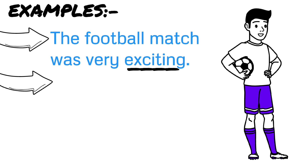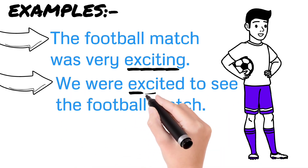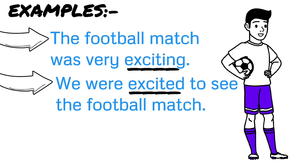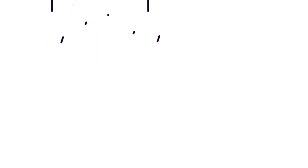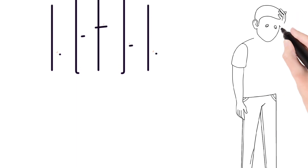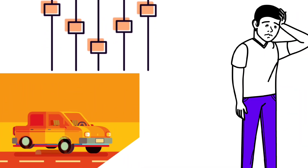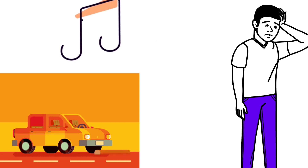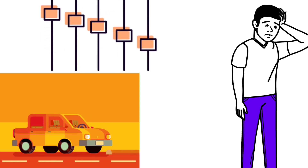'We were excited to see the football match' — 'excited' is an example of an -ed adjective, describing how the people felt. Similarly: 'I am interested in music' and 'The music was not interesting' — both 'interested' and 'interesting' are adjectives. 'He looked very tired' — tired is an adjective. 'The long journey was very tiring' — tiring is an adjective. Similarly: pleasing/pleased, boring/bored, and so on.